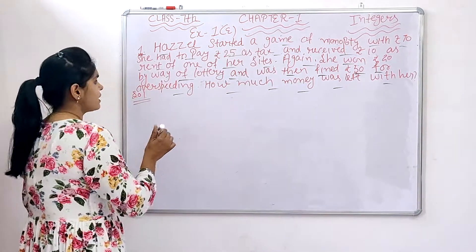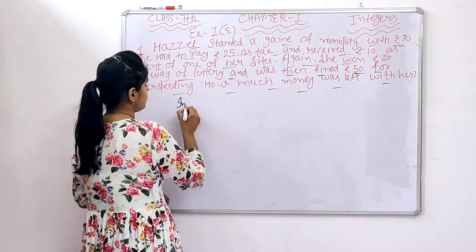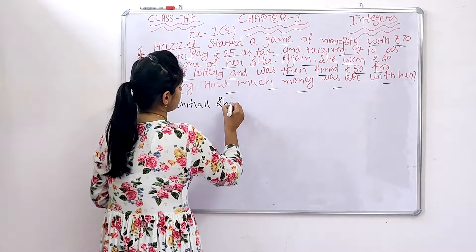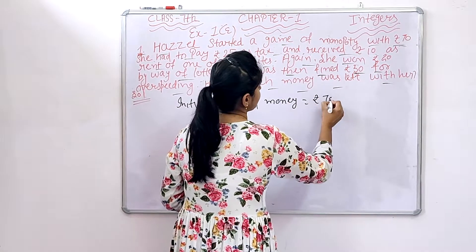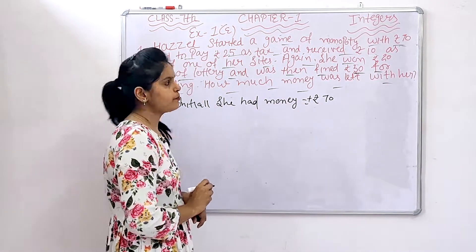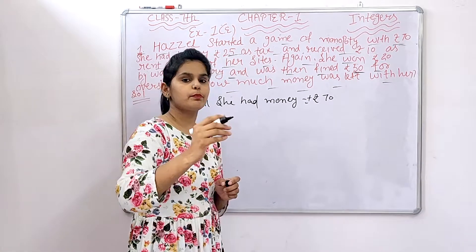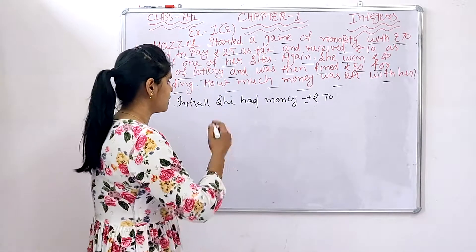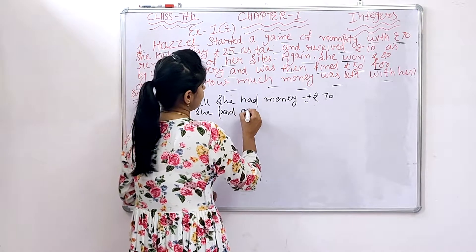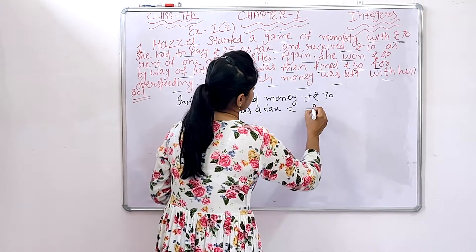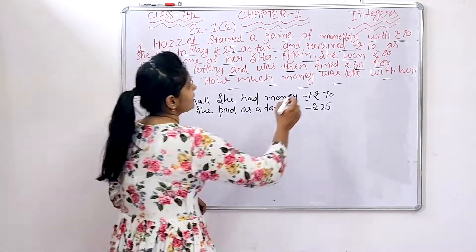Let's start the exercise. Initially she had money equals to Rs. 70. Next step: she had to pay Rs. 25 as tax. Since she paid, this is negative — minus Rs. 25 as the tax.